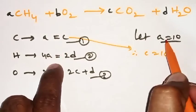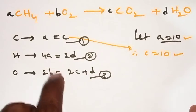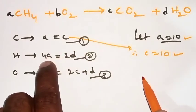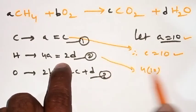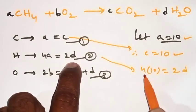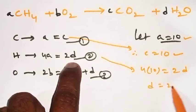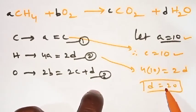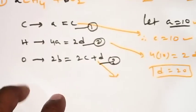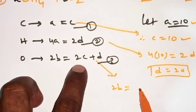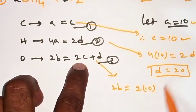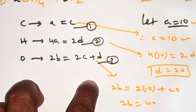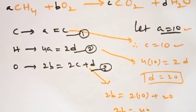Now we have 'a' and 'c'. From equation 2, substitute a = 10: 4 × 10 = 2d, so d = 40/2 = 20. Now from equation 3, substitute c = 10 and d = 20: 2b = 2(10) + 20, so 2b = 20 + 20 = 40, therefore b = 20. All values are found: a = 10, b = 20, c = 10, d = 20.